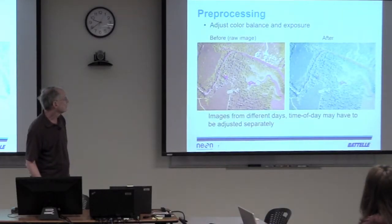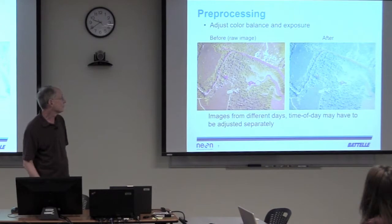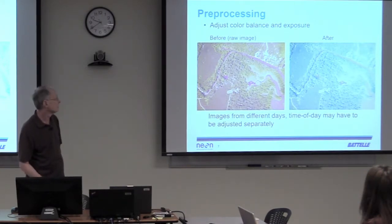Preprocessing: you can see on the left a raw image, and on the right a processed image. We try and make it appear as close to what you would see if you were actually up there looking down. As I said before, you may have to adjust these separately — it can be a very tedious process.